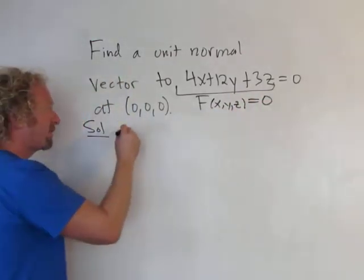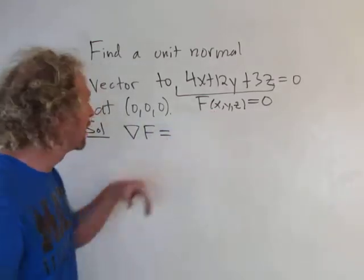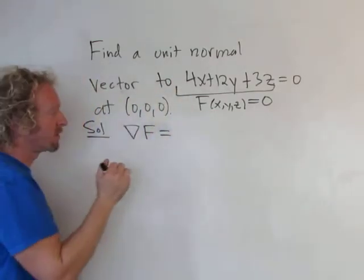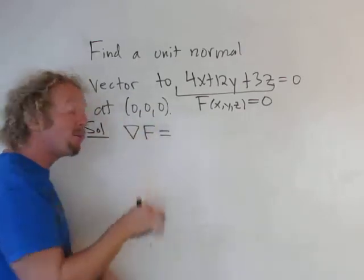So the gradient vector of this function is normal to this surface, so we're going to find the gradient and then just plug in (0, 0, 0), and then we're going to normalize it.